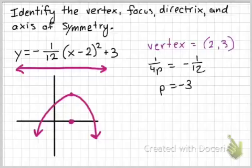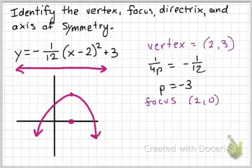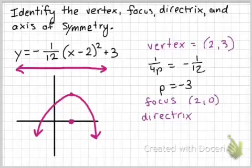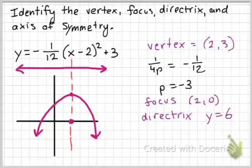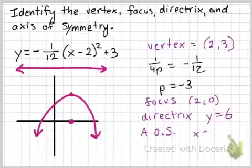Now, I just need to say what those values are. So, my focus is at 2, 0, and the equation for my directrix is at y equals 6. Remember, it's a horizontal line, so we make that equation by saying y equals. The last thing we need is our axis of symmetry, which would be a vertical line right through my vertex. So, that axis of symmetry is at x equals 2, because that's a vertical line.